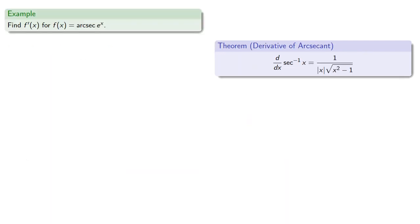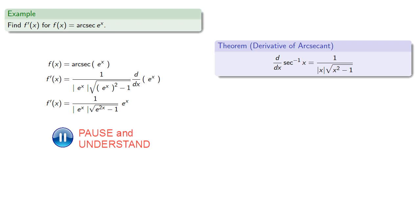So if I want to find the derivative of arcsecant e to the x, we get... And since e to the x is positive for all values of x, then the absolute value of e to the x is e to the x, and we can remove the common factor to get...